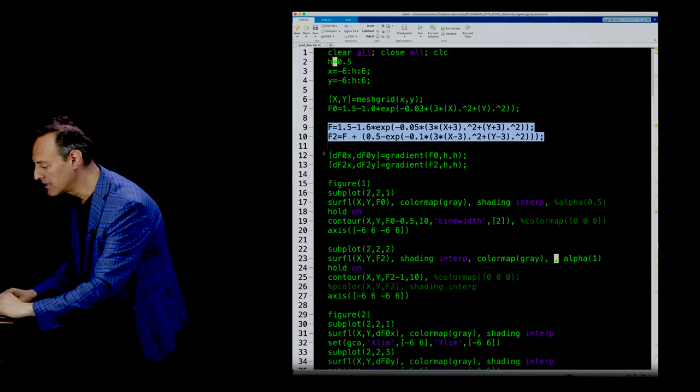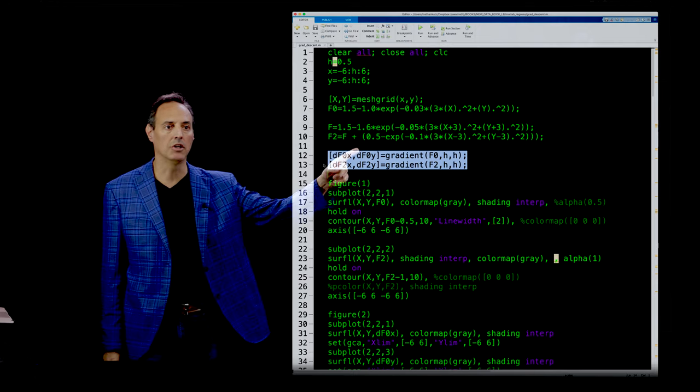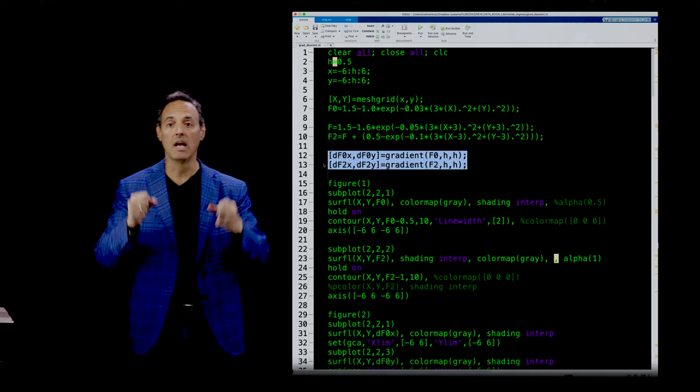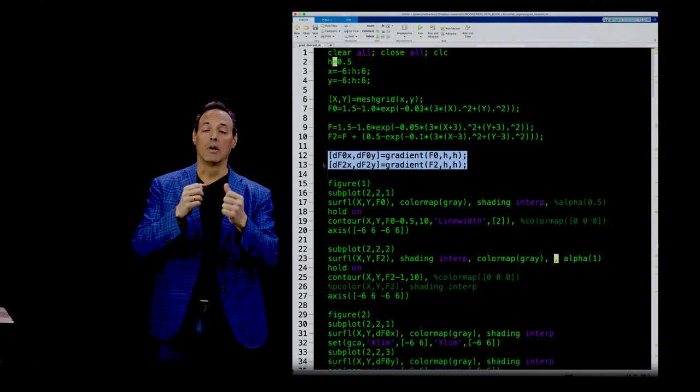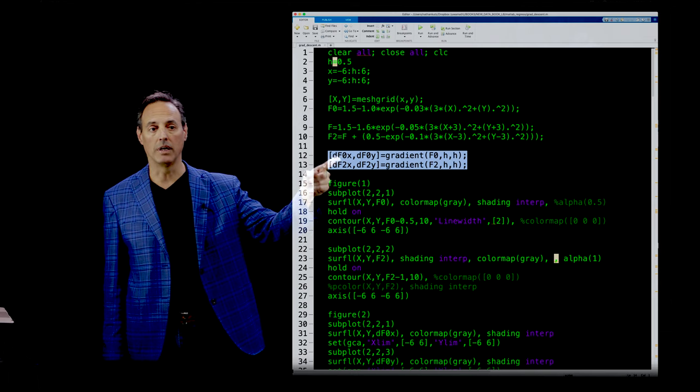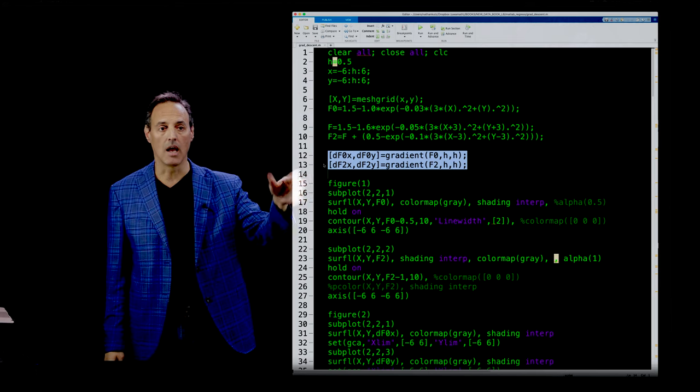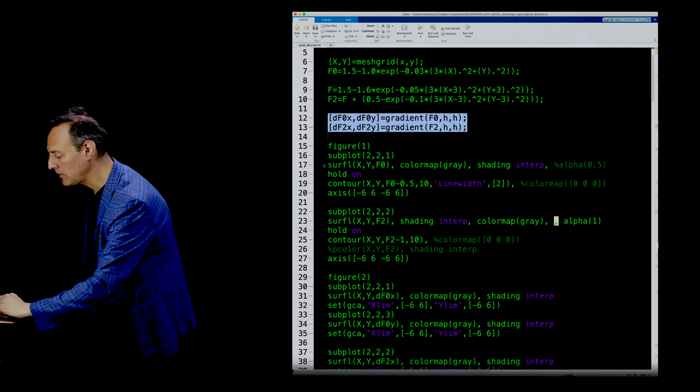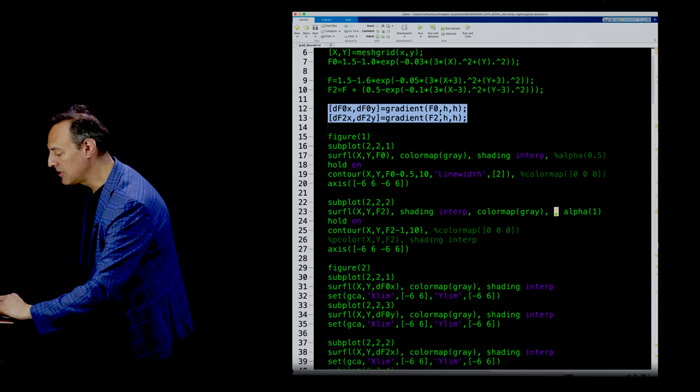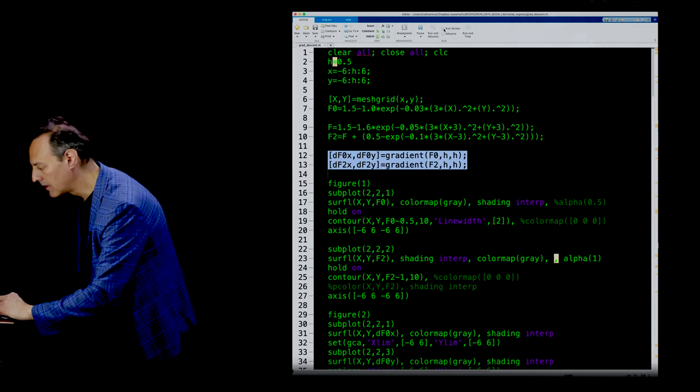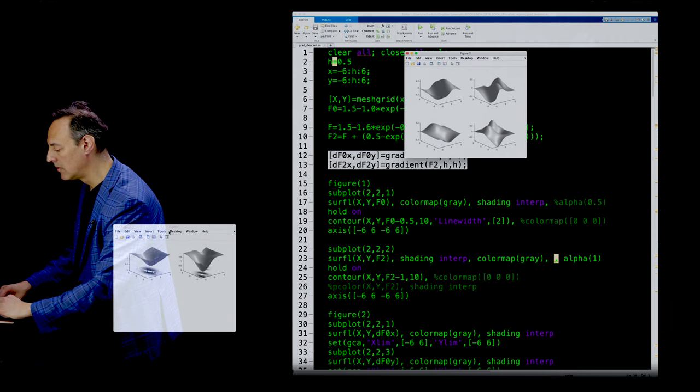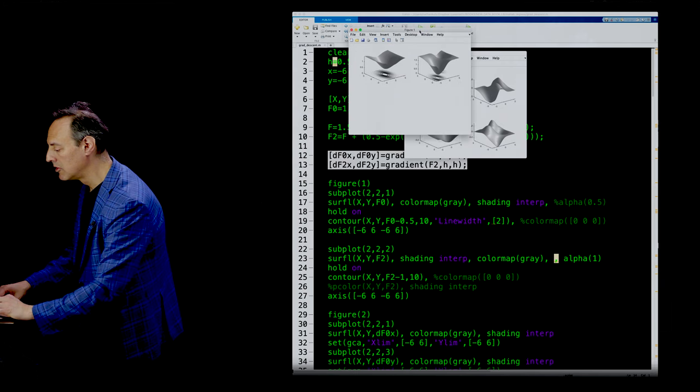Once I've defined these, I can use the gradient command to produce the gradient. That's what we're using to update that step. Remember, my next value is where I am plus a little bit of something, and that depends on this gradient computation. I compute the gradient and start walking downhill. Once I have that, I can iterate and follow this downhill. Let me show you what these surfaces look like.